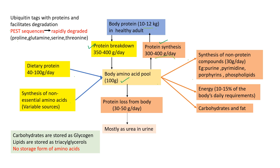The old and damaged proteins are tagged with a peptide called ubiquitin, which facilitates their degradation. Those amino acids with PEST sequences undergo rapid degradation — PEST meaning those with a sequence of proline, glutamine, serine, and threonine — because they are rapidly tagged by ubiquitin peptides.